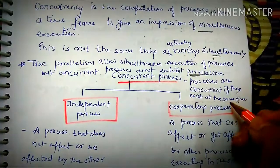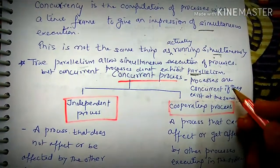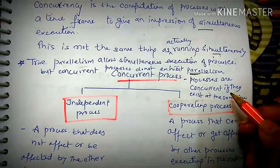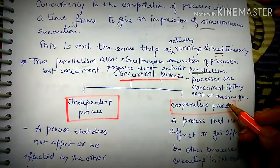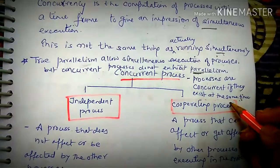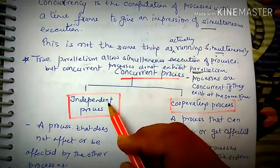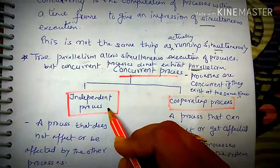Concurrency means processes exist at the same time, within the same time frame of memory. Concurrency processes exist at the same time frame.